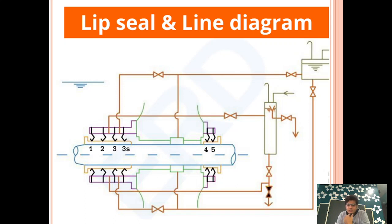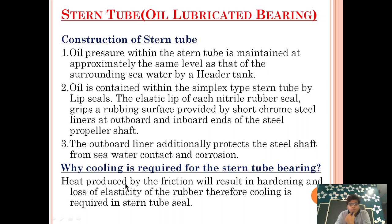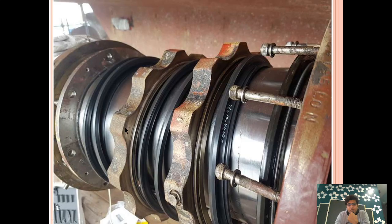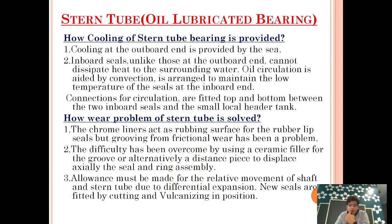Now the question comes to mind: why is cooling required? We need lubrication because it is a bearing — for the bearing we provide oil. But why do the lip seals also require cooling? Heat produced by friction will result in hardening and loss of elasticity of the rubber. Therefore, cooling is required for the stern tube seal. If there is no cooling, the lip seal — which is made of rubber — will harden over time and lose its elasticity to seal. To prevent that, both lubrication and cooling are carried out simultaneously by the oil.